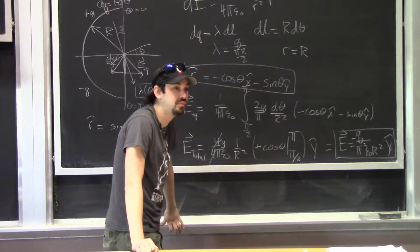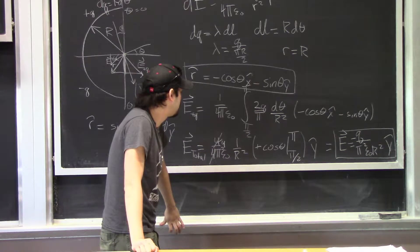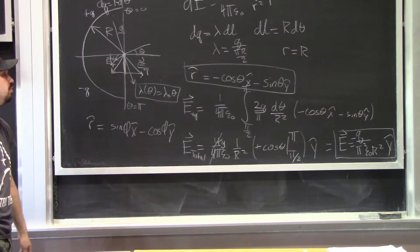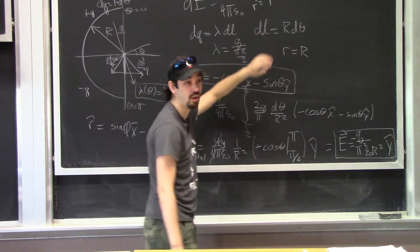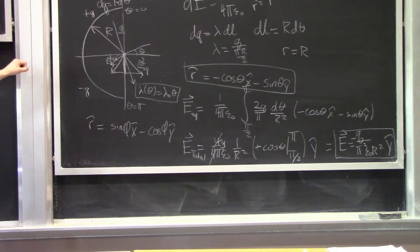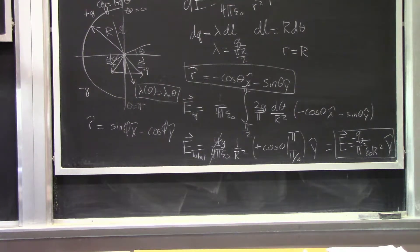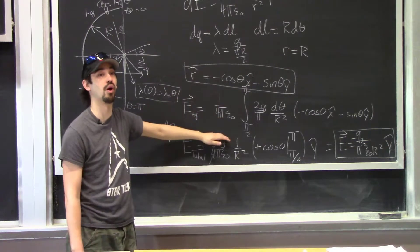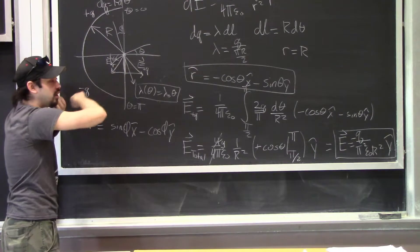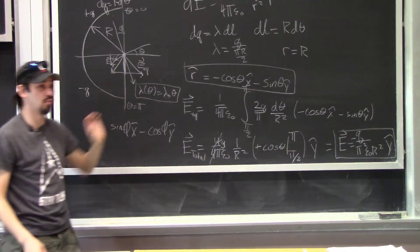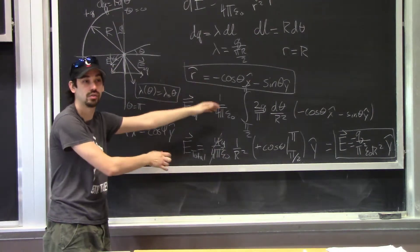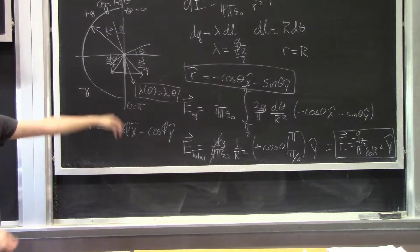Student question: on exams, will we get most points for setting up the integral even without solving it? For this type of problem, some points are allocated to evaluating the integral since it's just a sine or cosine, but the majority of points are in setting up the integral — defining λ, defining R, defining dL. For a 25-point problem, maybe three or four points are in evaluating the integral. I'd also give extra credit for making the physical argument and noting when your calculated answer isn't consistent with your prediction.